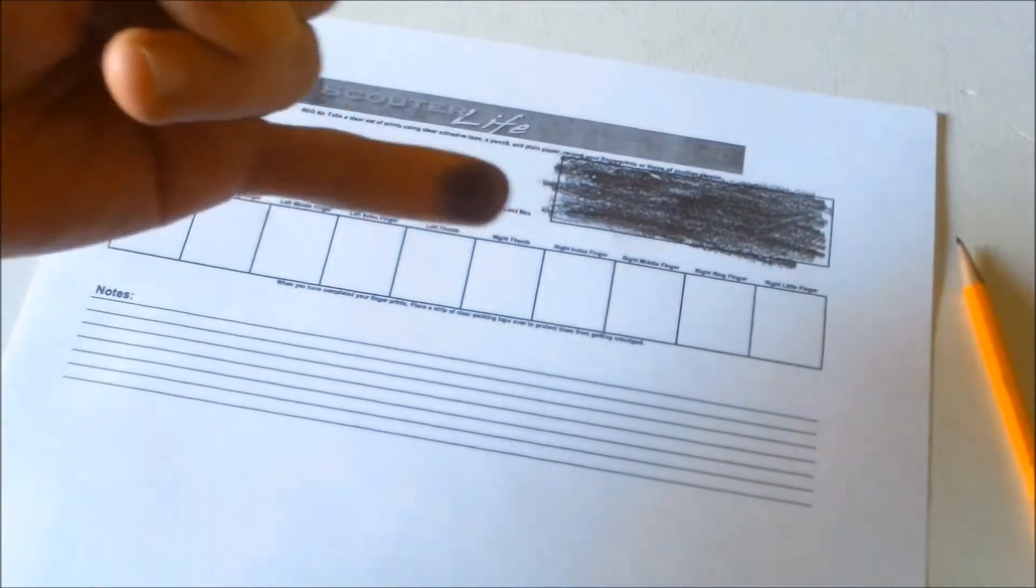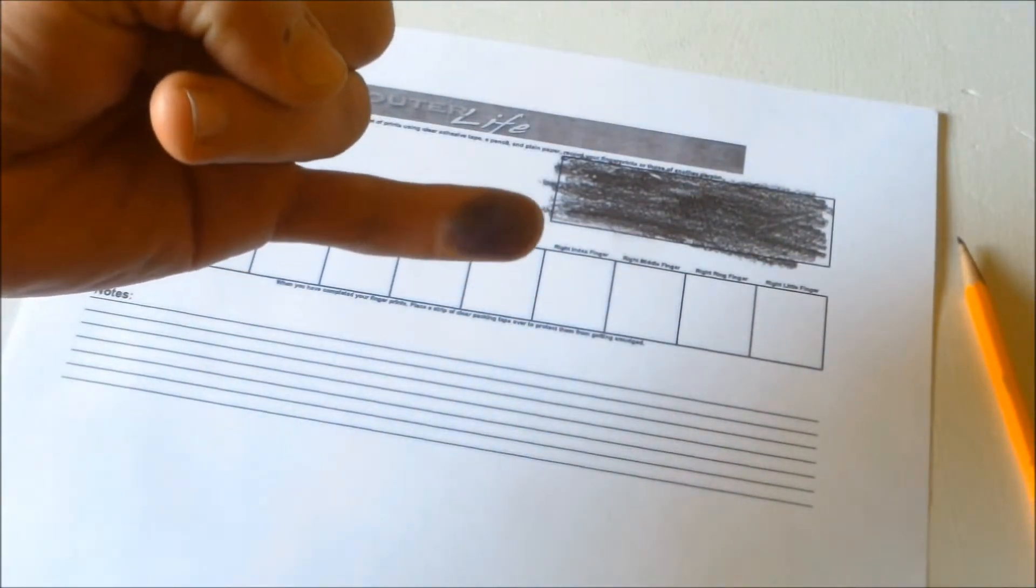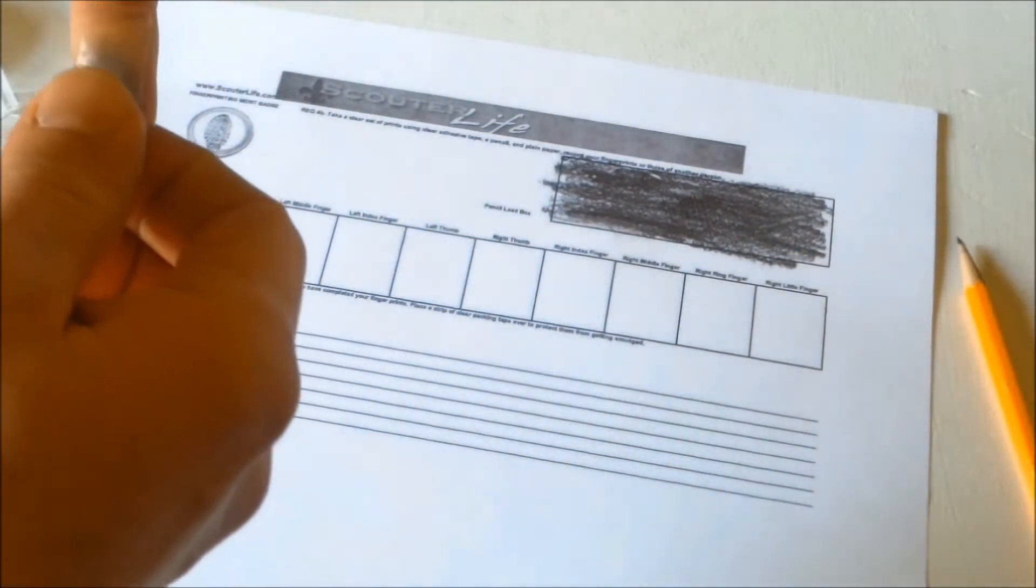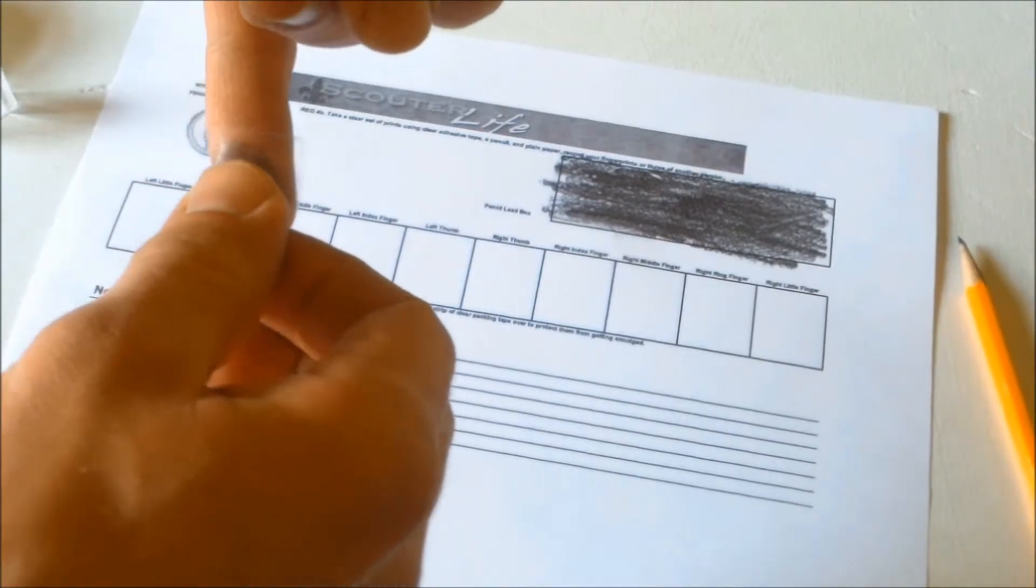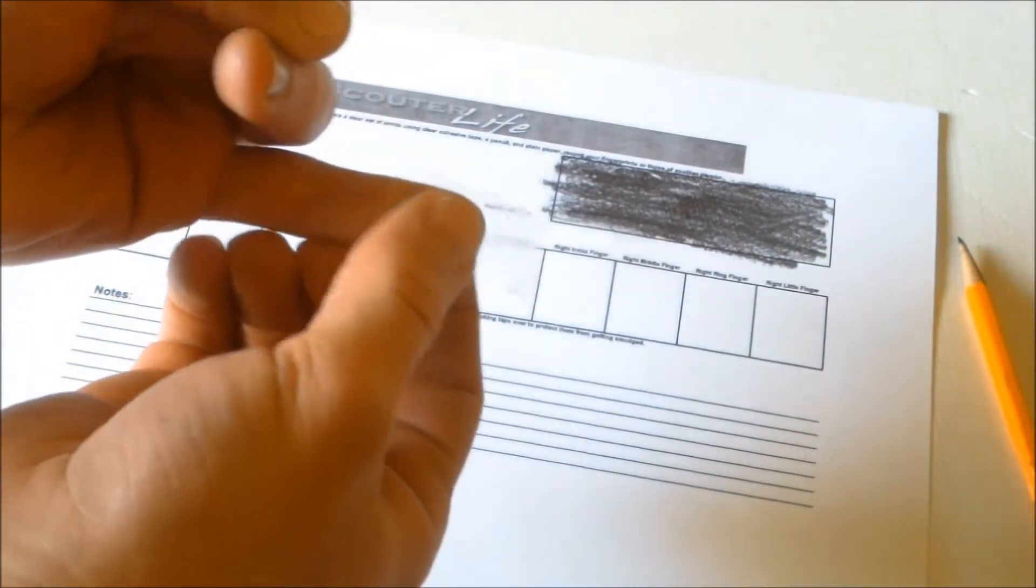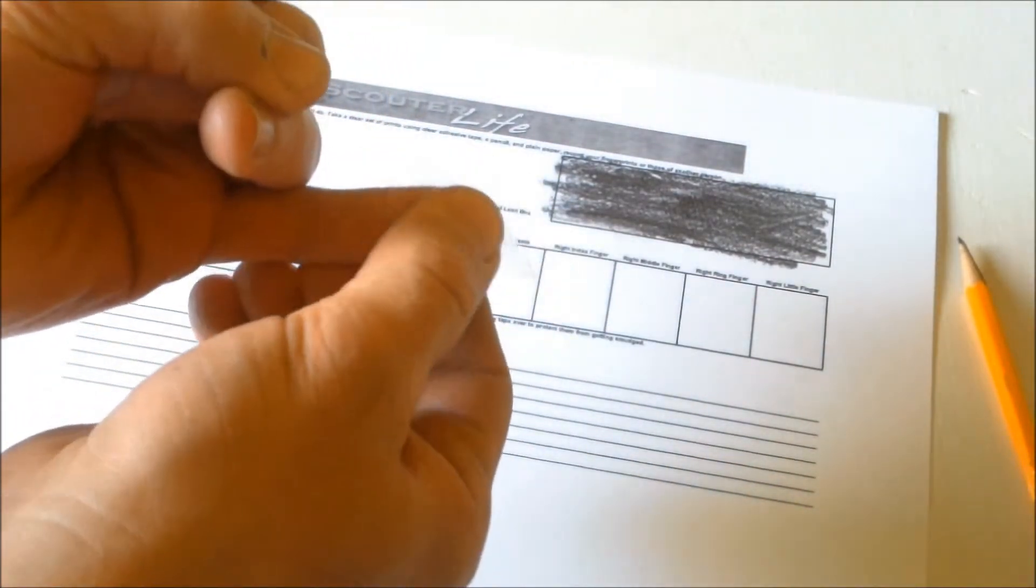You'll see that there is now pencil lead on my fingertip. Take your tape, place it on, and rub it on.